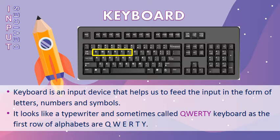Keyboard is an input device that helps us to feed input in the form of letters, numbers, and symbols. It looks like a typewriter and is sometimes called a QWERTY keyboard as the first row of alphabets are Q, W, E, R, T, Y. The letters, numbers, and symbols are arranged on blocks called keys. There are different sets of keys such as alphabet keys, number keys, symbol keys, arrow keys, and special keys.